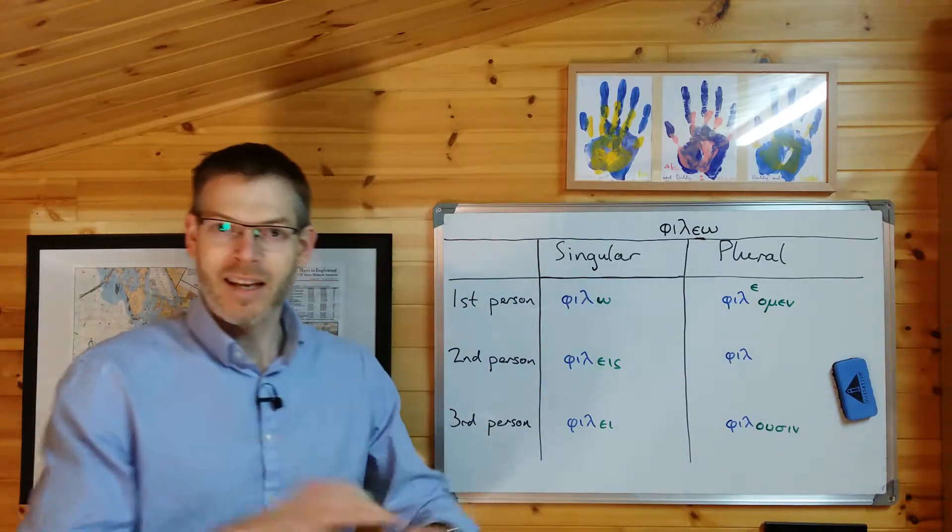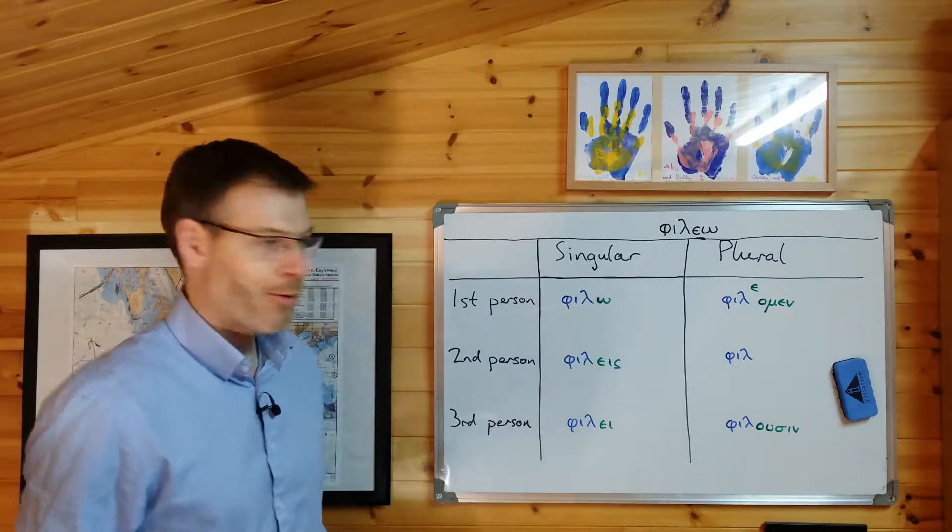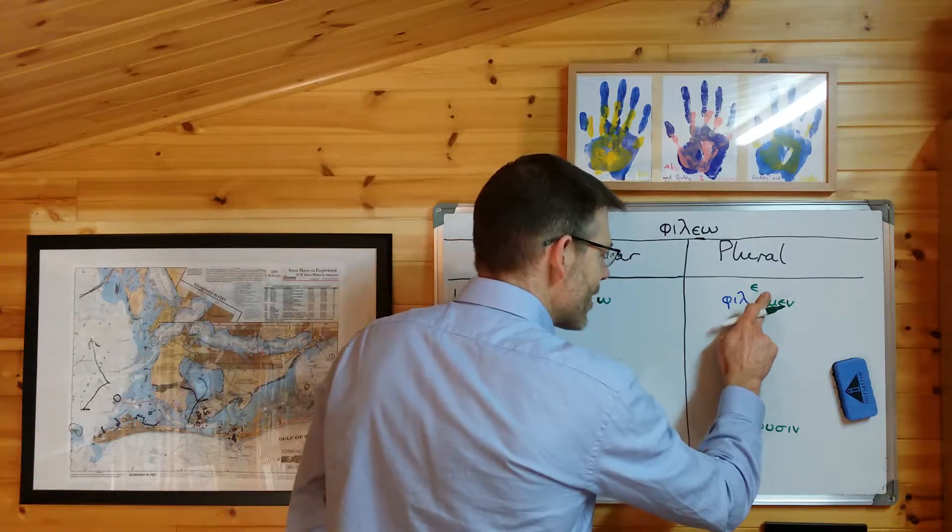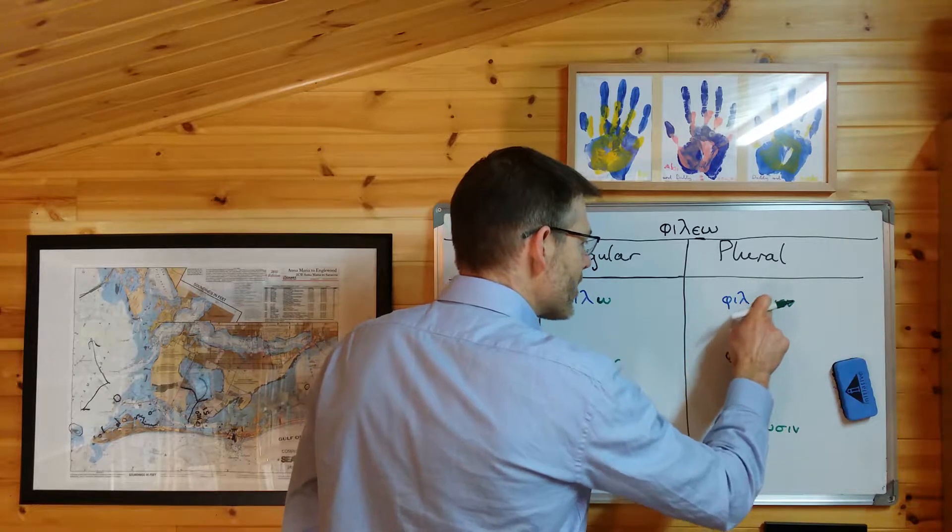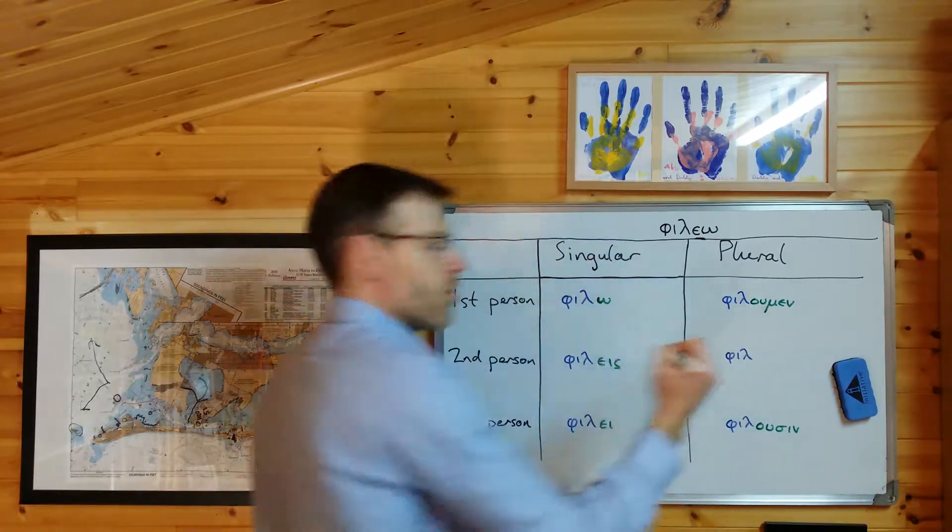I like to be part of a long vowel or I like to be part of a diphthong. And so it turns the omicron into a corresponding diphthong, ου.